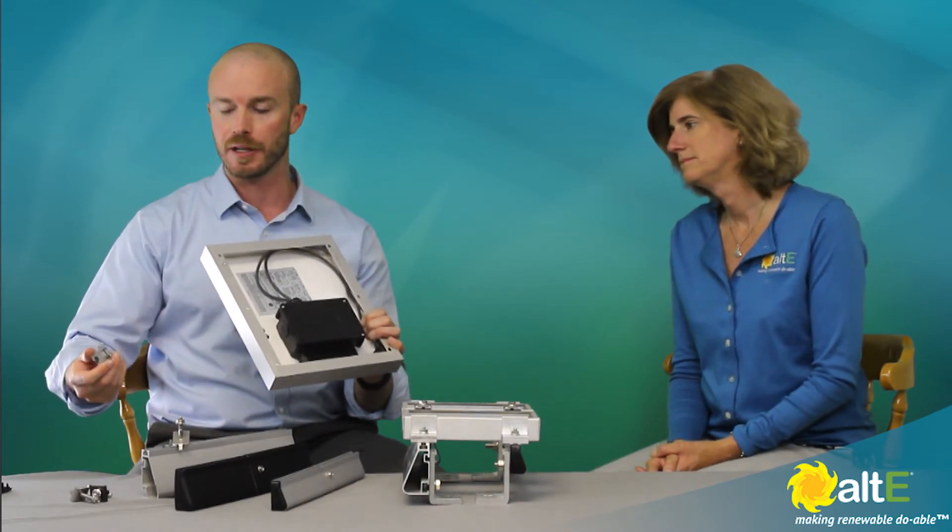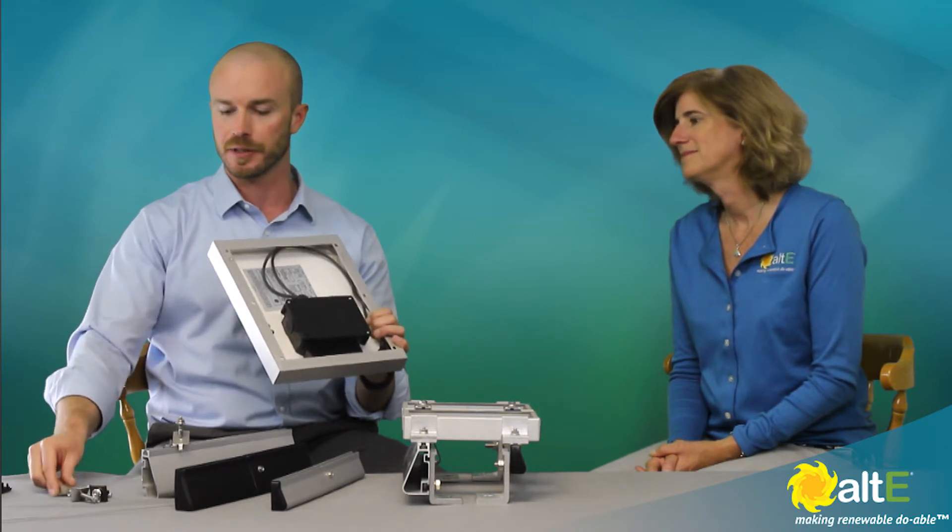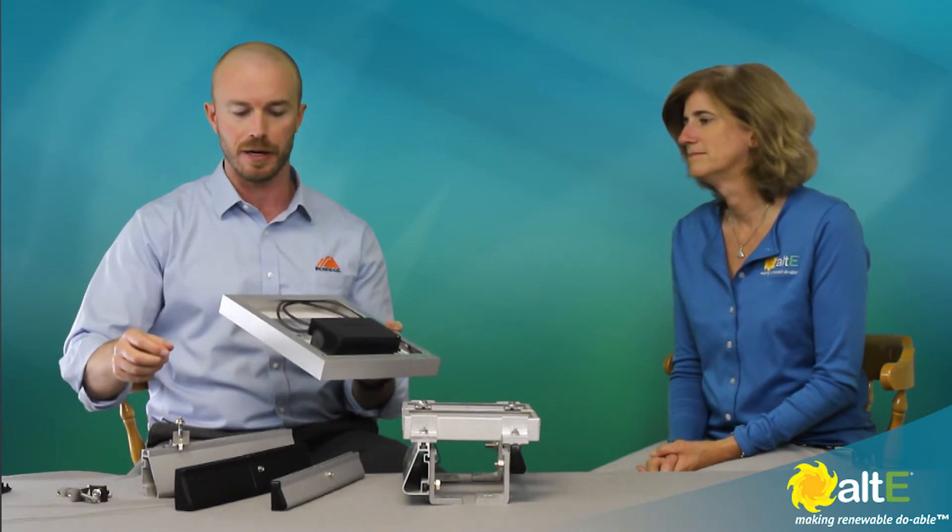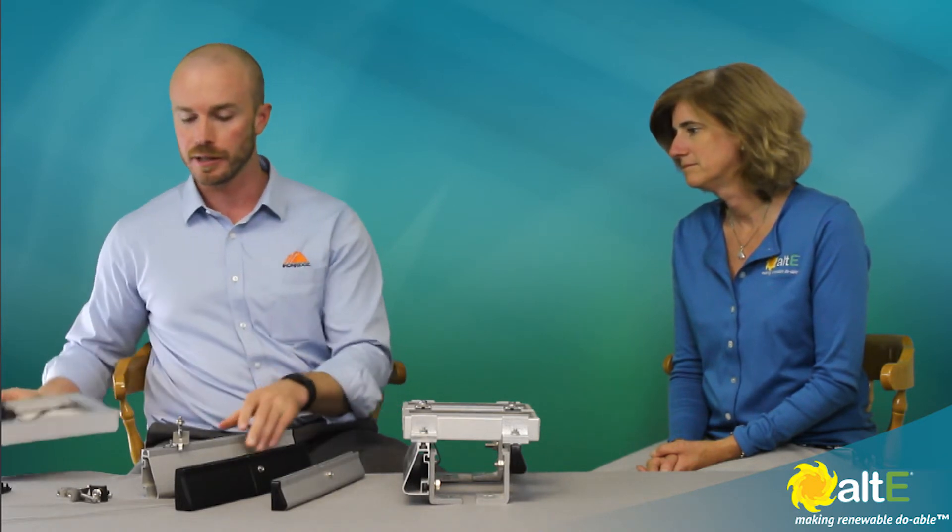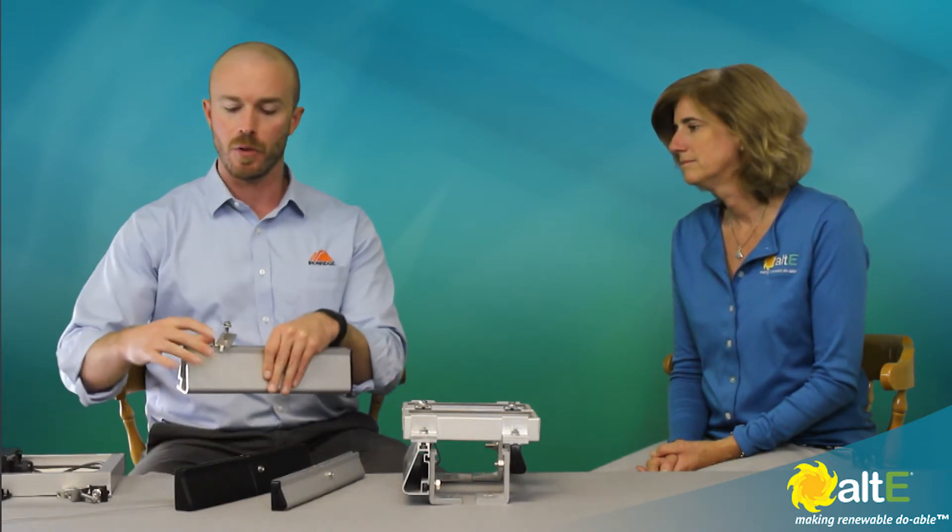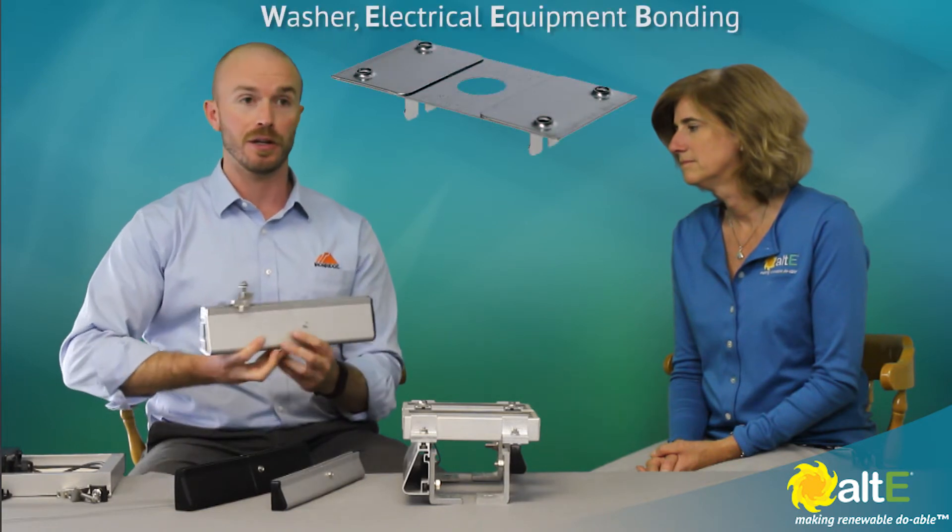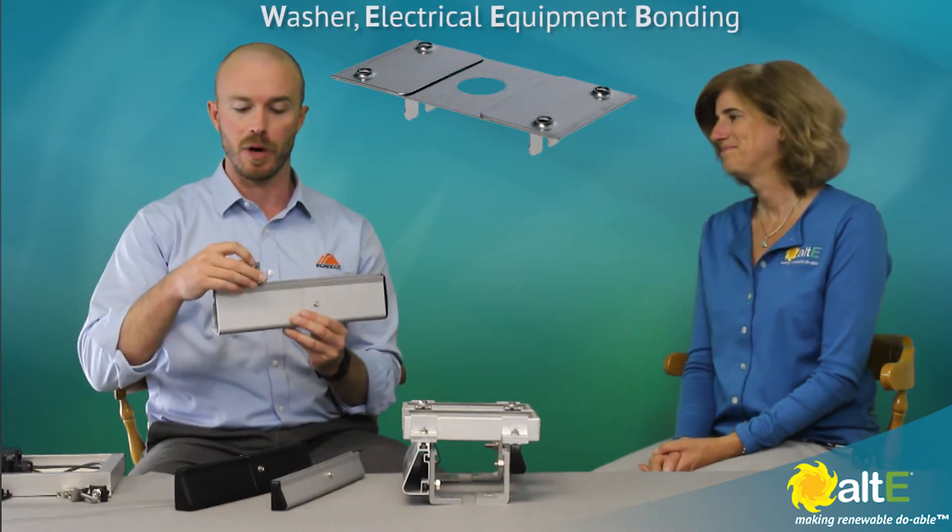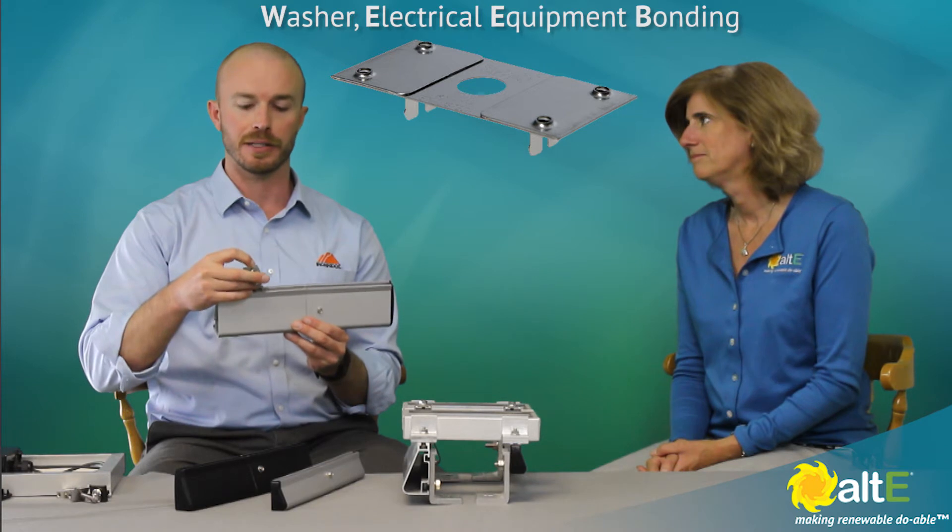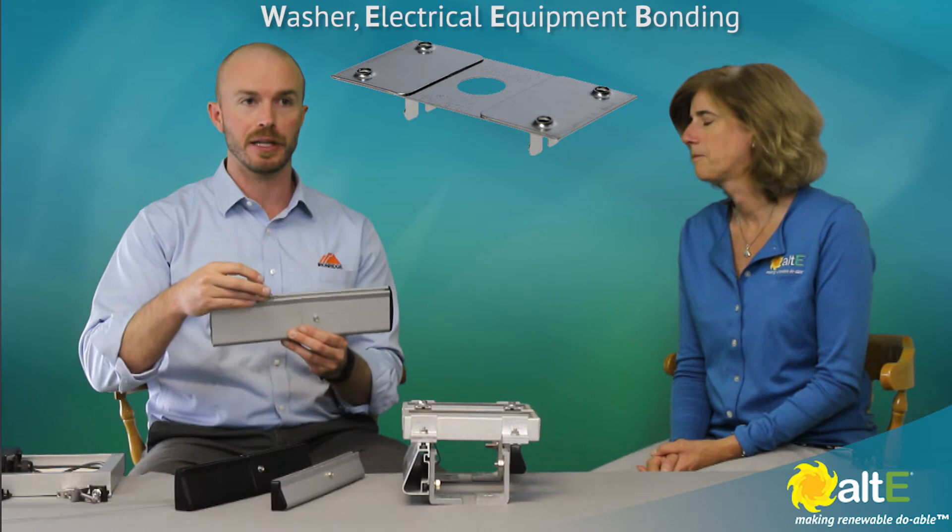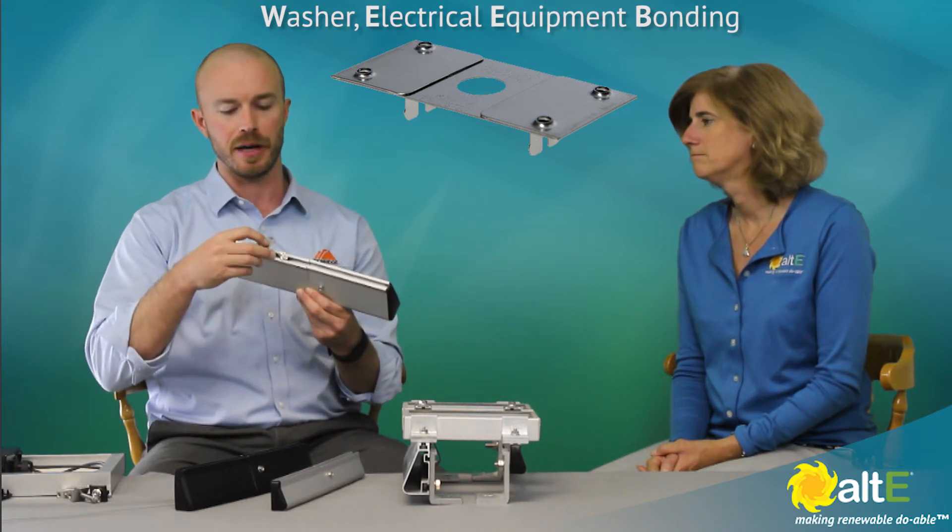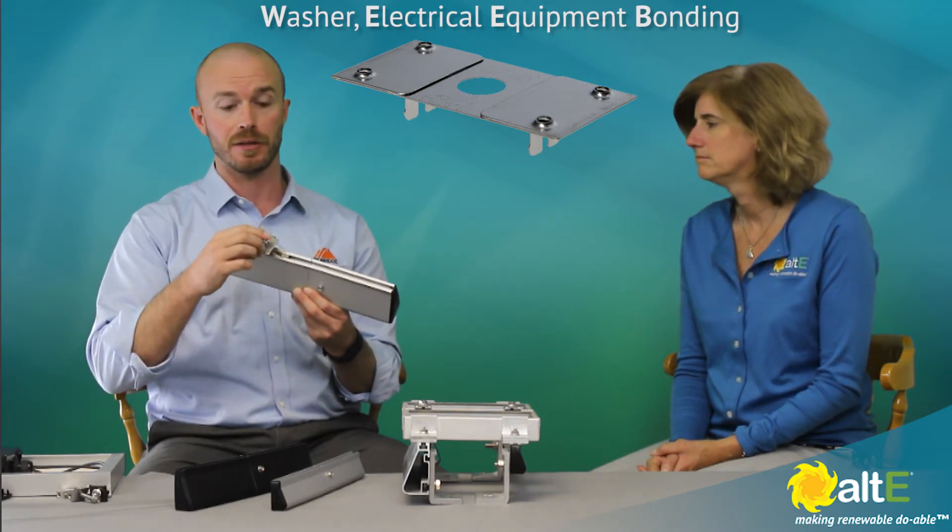IronRidge and the rest of the industry was listening to the customers saying that this was not ideal. So the next thing that people did instead of using lugs was they came up with a grounding washer, commonly called a Weeb that was made by Wiley Industries and then subsequently adopted by the industry. The name Weeb stuck and people were using them, as you can see, by mounting it to the channel on the rail.